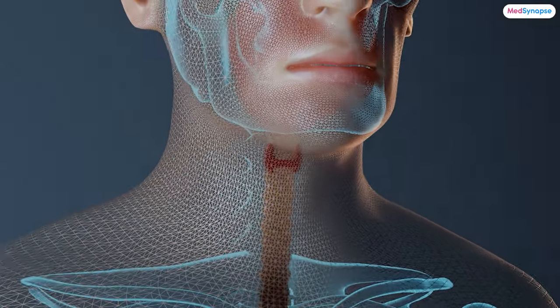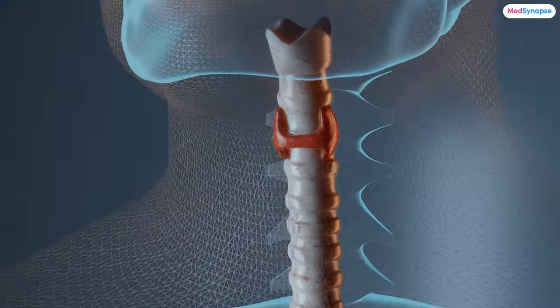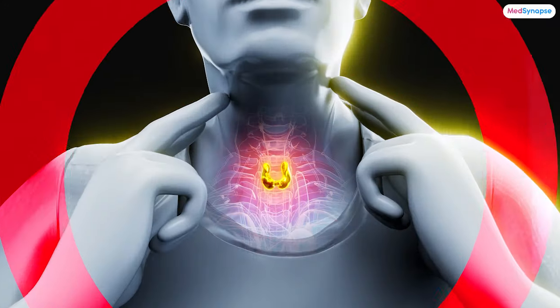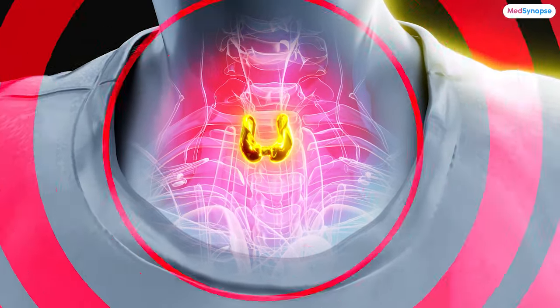Dr. Rahul, before we dive into our discussion, I would like to touch on a few points. We know that thyroid dysfunction is a prevalent issue in today's population with various factors contributing to its prevalence. So could you shed some light on this? First of all, let's discuss what is the thyroid gland. The thyroid gland is a small butterfly-shaped gland at the base of the neck. It basically produces two main hormones, the T3 and the T4. The overproduction or underproduction of which would cause either hypothyroidism, which is the underproduction, or hyperthyroidism, which is the overproduction.